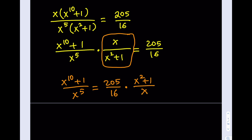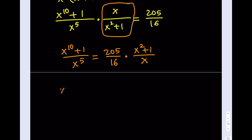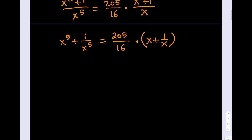Note that x does not equal 0 in all these cases, and x squared plus 1 does not equal 0 because x needs to be a real number. Now I'm going to separate these: I can write this as x to the 5th plus 1 over x to the 5th, equals 205 divided by 16 multiplied by x plus 1 over x. My goal is to express x to the 5th plus 1 over x to the 5th in terms of x plus 1 over x. So I'd like to take x plus 1 over x and raise it to the 5th power using the binomial theorem.